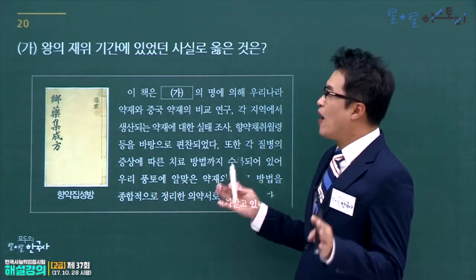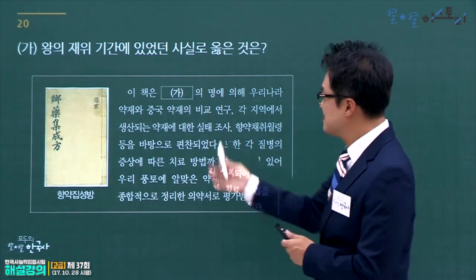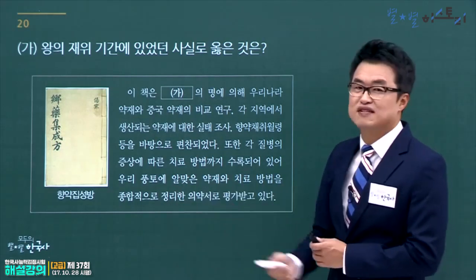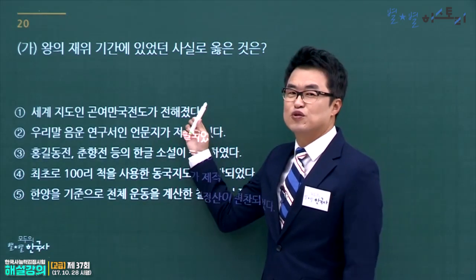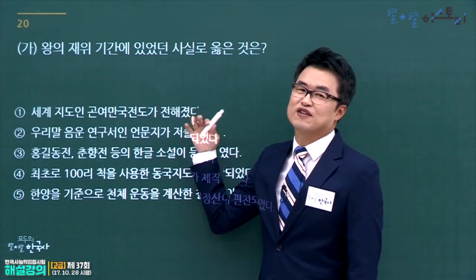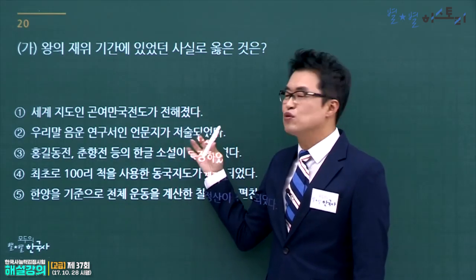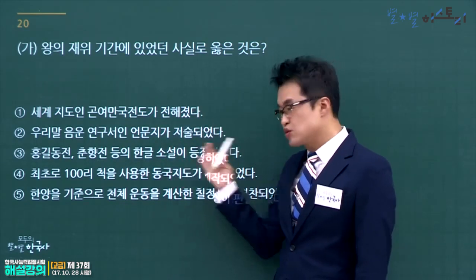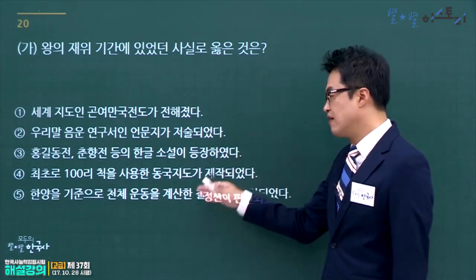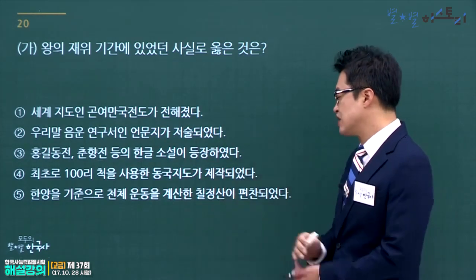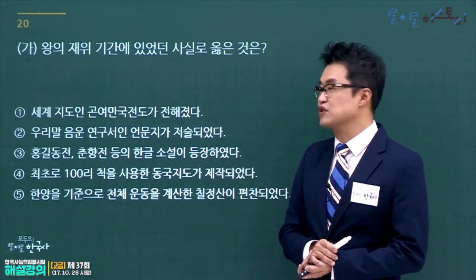향약집성방을 편찬한 왕은 세종입니다. 세종 재위기간에 있었던 사실을 고릅니다. 곤여만국전도는 조선 후기 서양의 영향, 언문지·한글소설·동국지도는 모두 조선 후기입니다. 한양 기준의 역법서인 칠정산이 세종 때 편찬되었으므로 정답은 5번입니다.